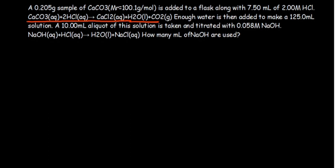The question continues: enough water is then added to make 125 milliliters of solution. After that, 10 milliliters of this solution is taken and then titrated with sodium hydroxide. So now the question is: how many milliliters of sodium hydroxide are used? We need to understand what the question is saying before we answer it.